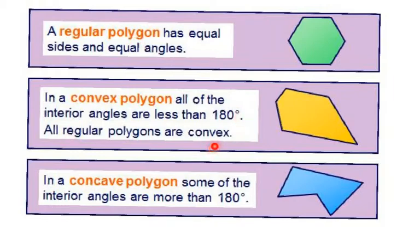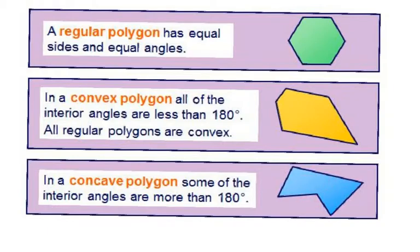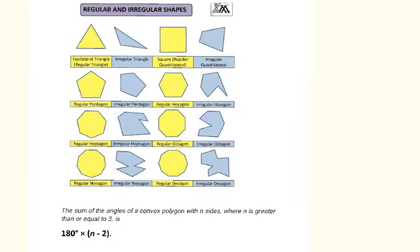If it's a regular polygon, it's going to be convex — all of the angles are pointing outward. In a concave polygon, some of the interior angles are more than 180 degrees. You can see that angle is pointing into the shape — it's caving in. That's one way to remember what a concave polygon is.